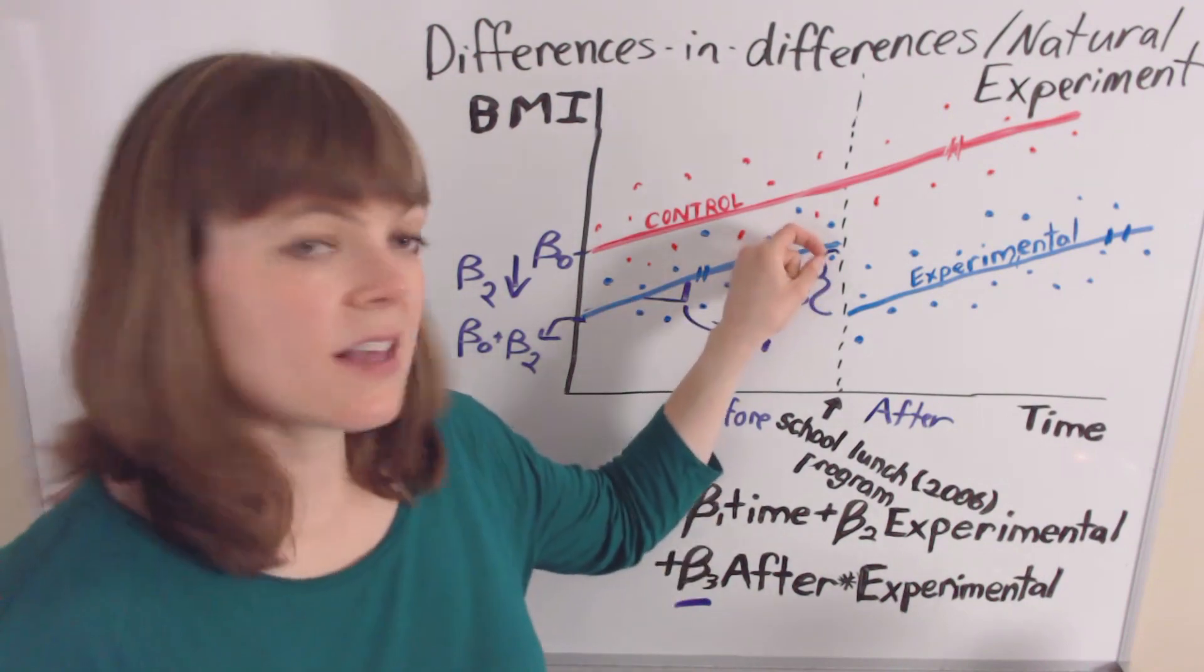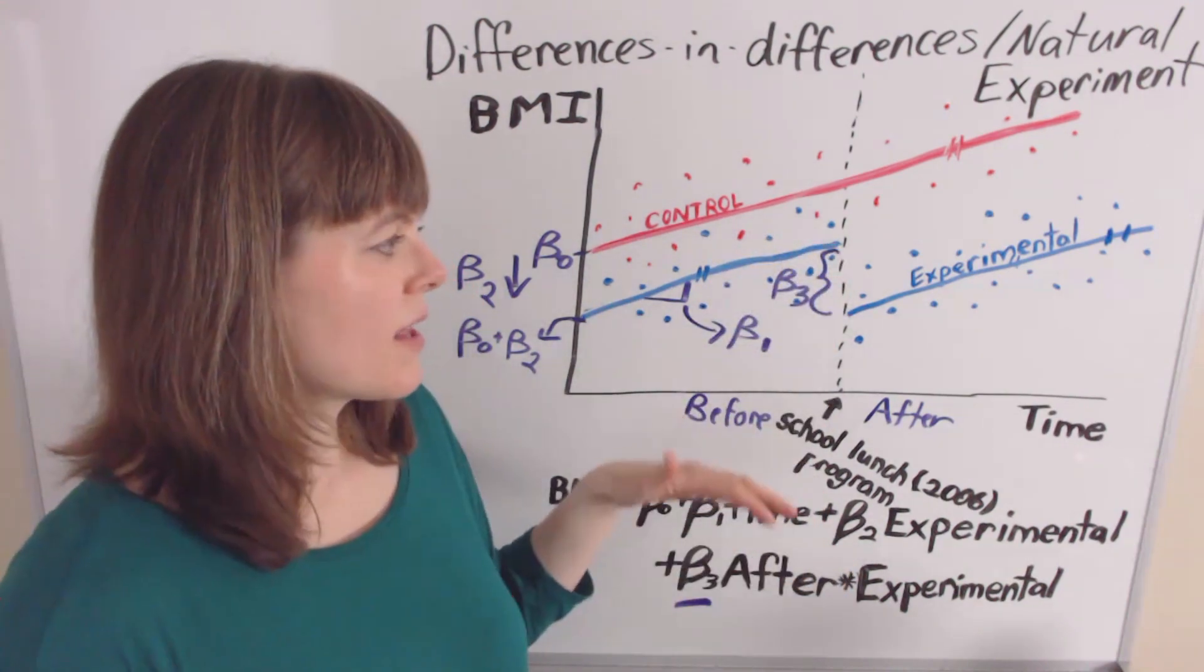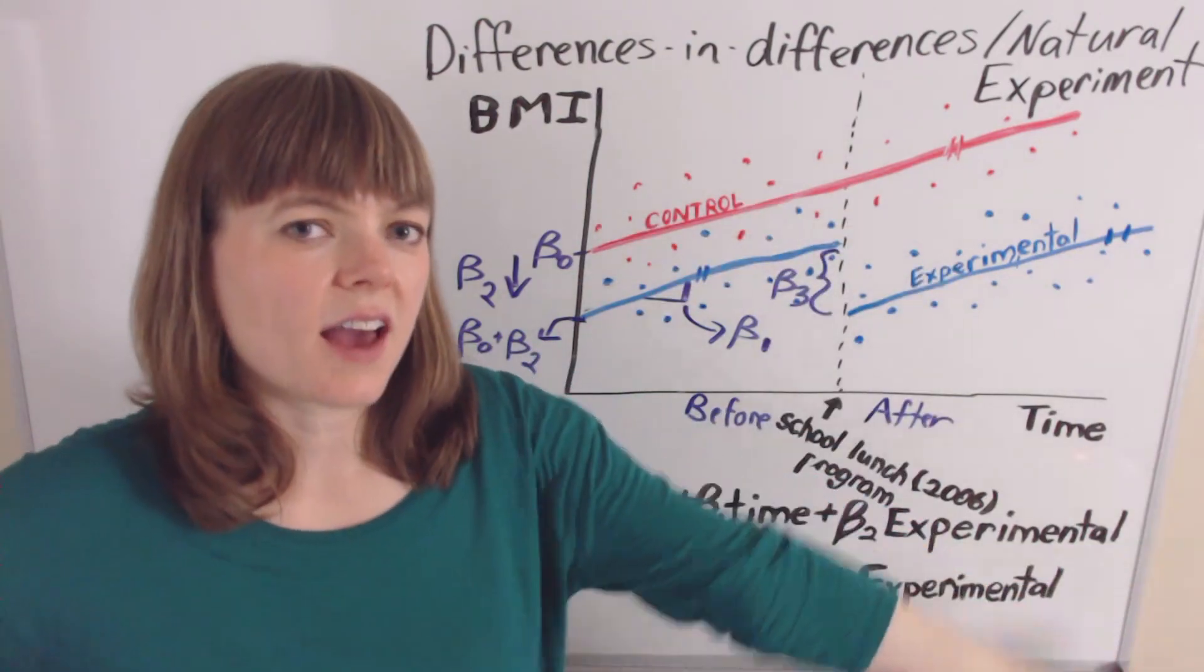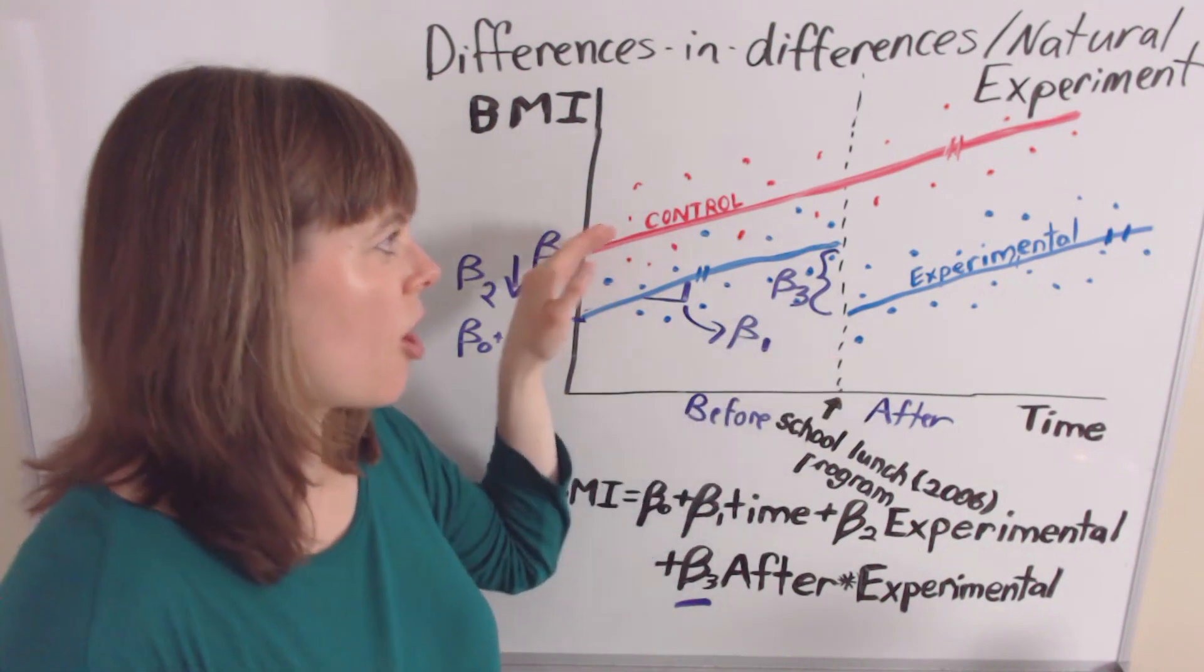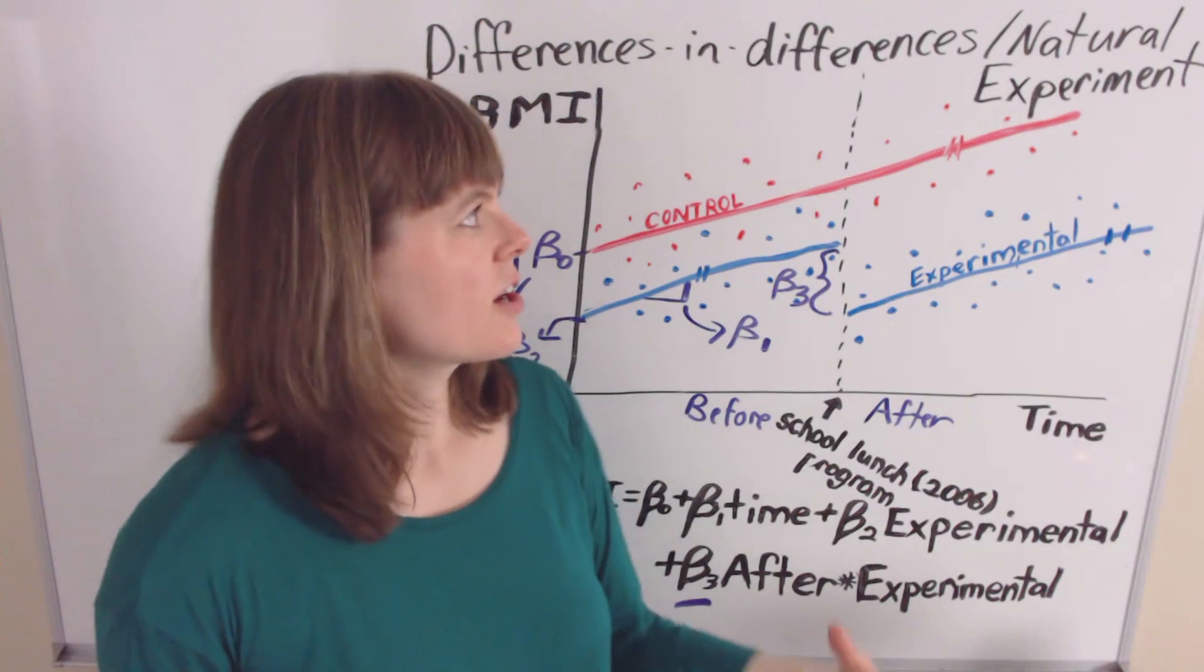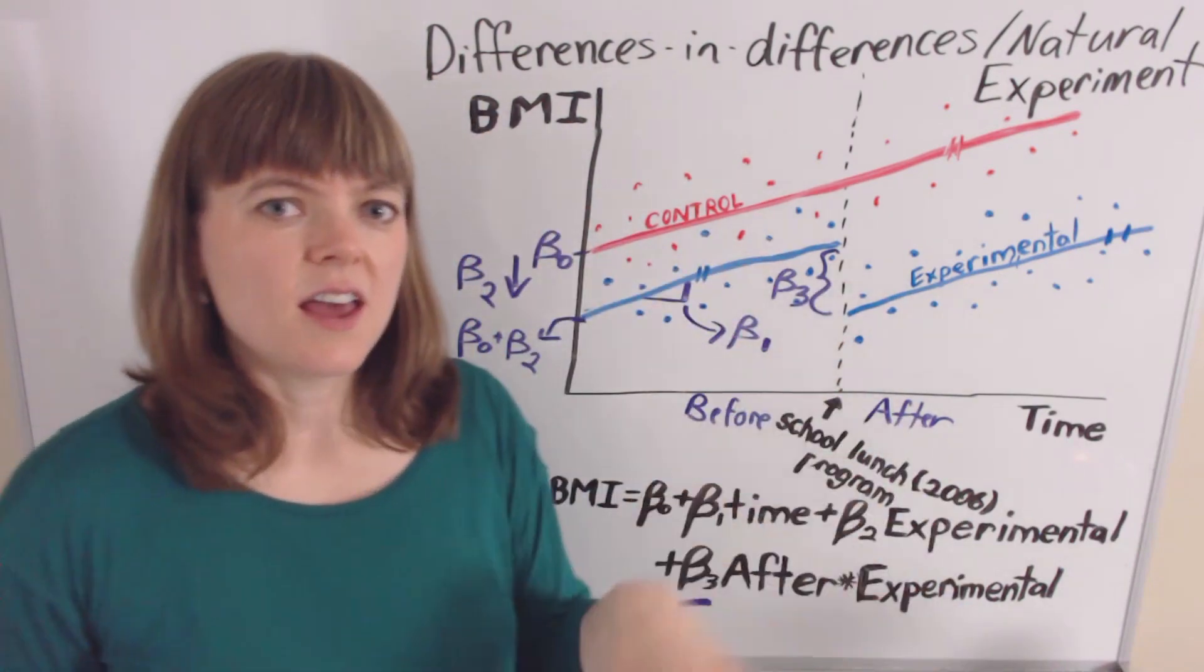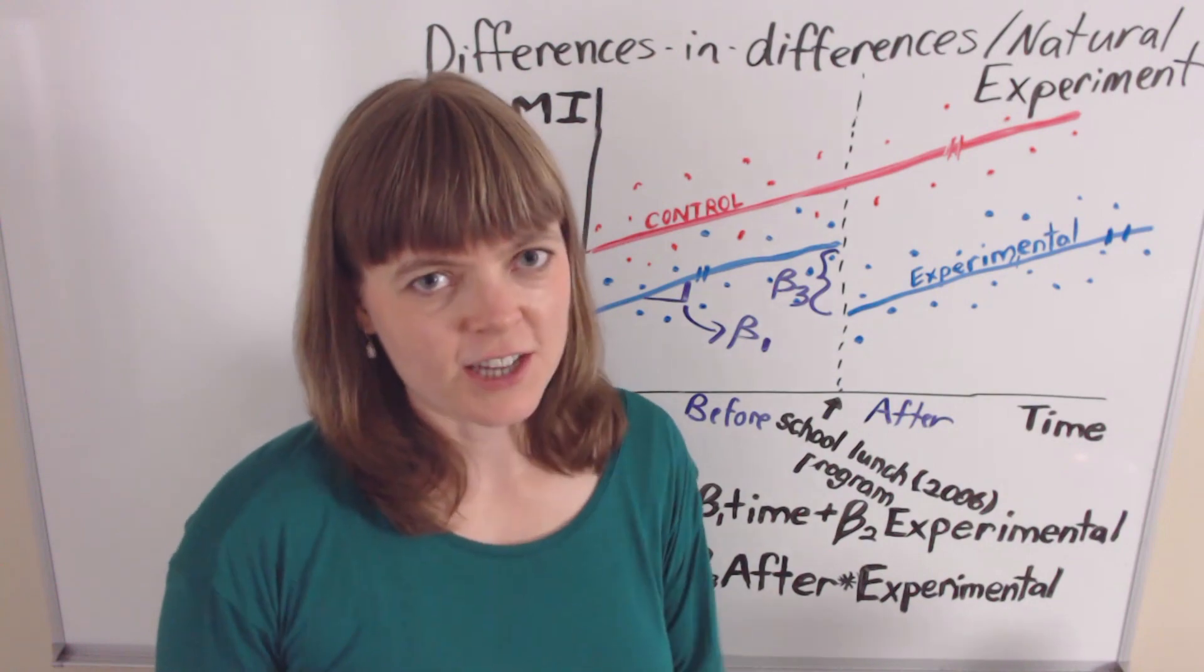This is capturing what is the effect of the actual school lunch program, assuming that anything else in the economy that's happening in 2006 that's not related to the school lunch program is also happening to our control group. And that's a pretty strong assumption, which is why differences in differences is not at the top of the food chain among our identification strategies.